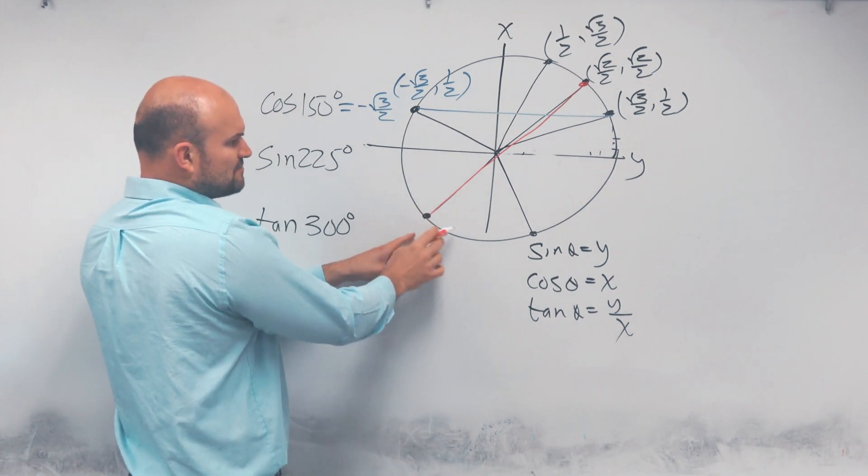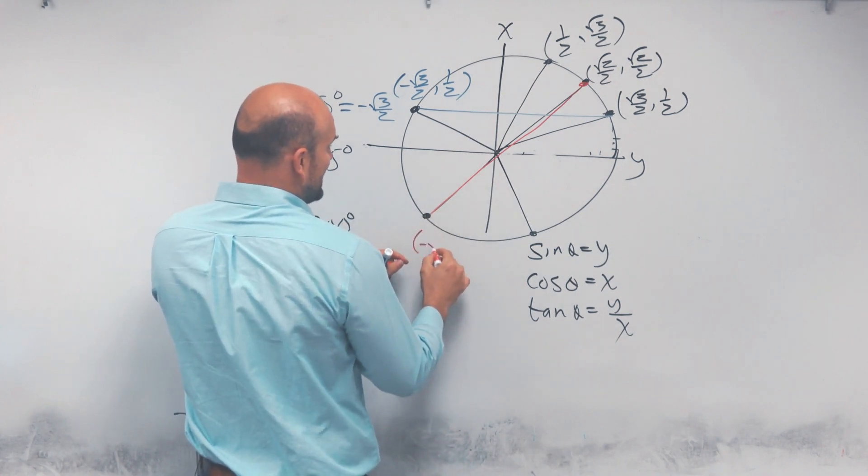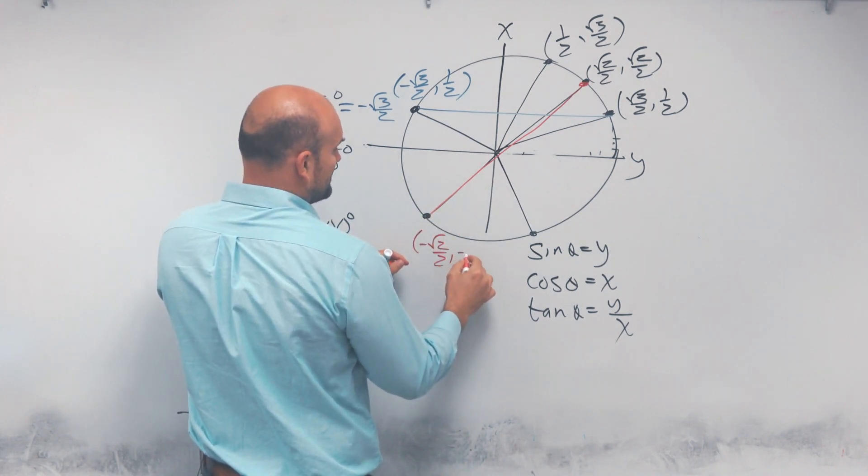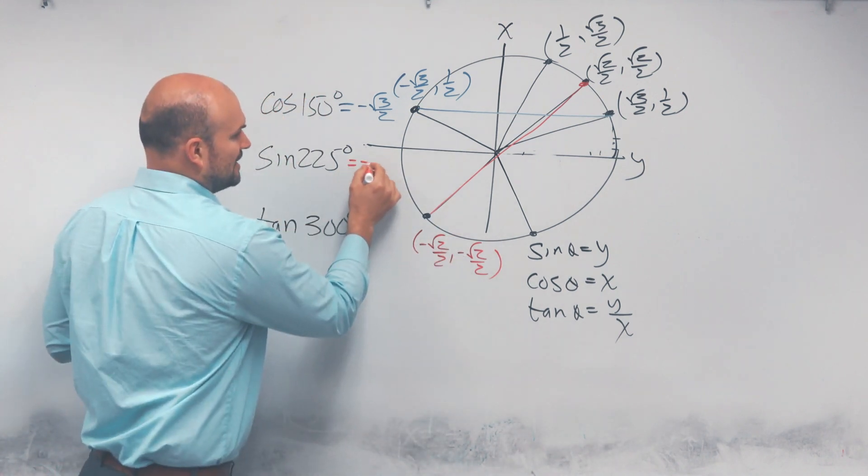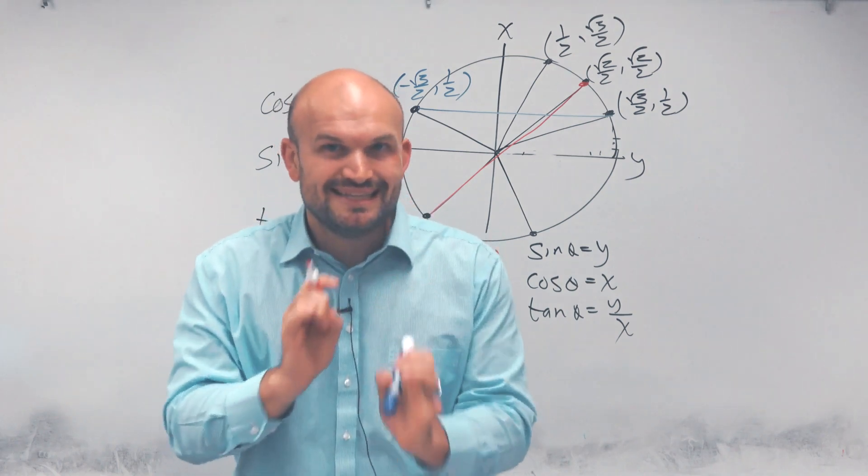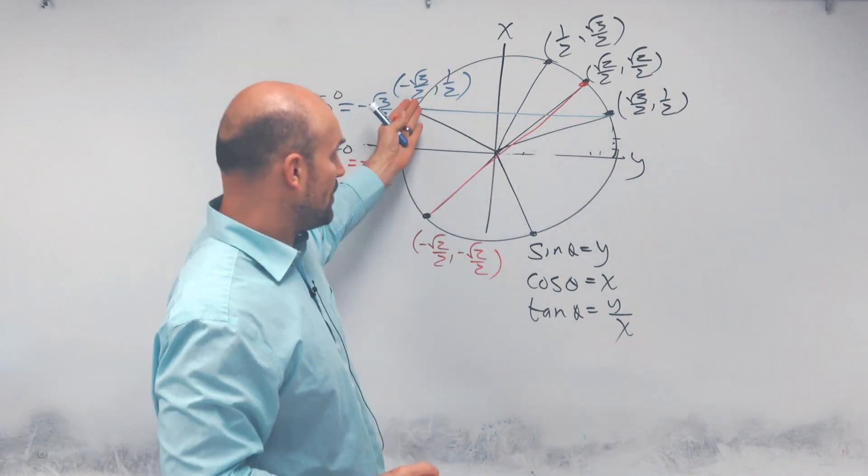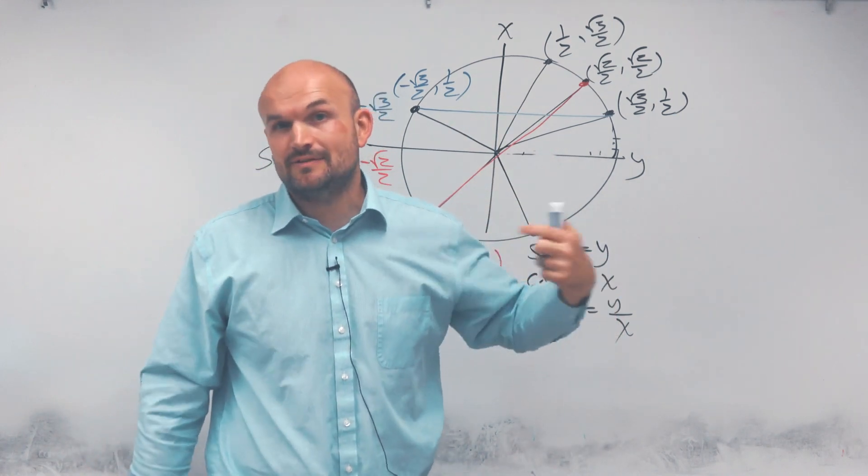That's right in the middle. So therefore this coordinate point here is now just going to be negative square root of 2 over 2 comma negative square root of 2 over 2. Therefore the sine is going to equal negative square root of 2 over 2. So you can just use reflections really easily just to understand are you reflecting about the y-axis, are you reflecting about the x-axis, or are you going to be reflecting about the origin.